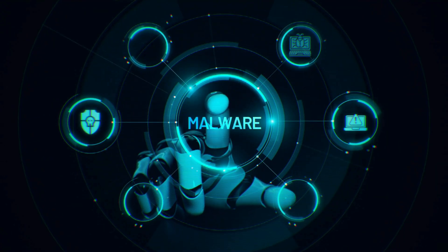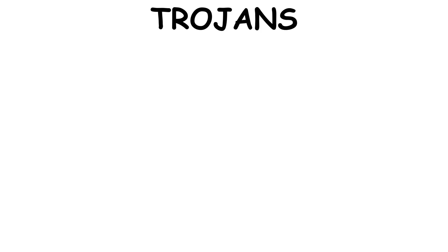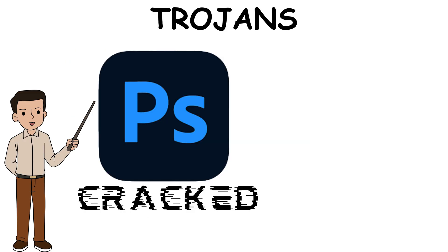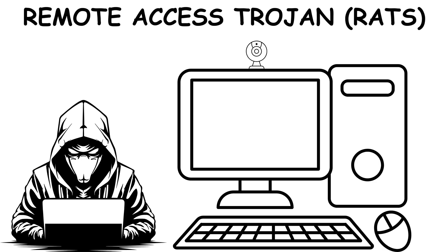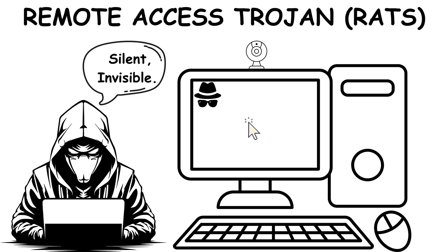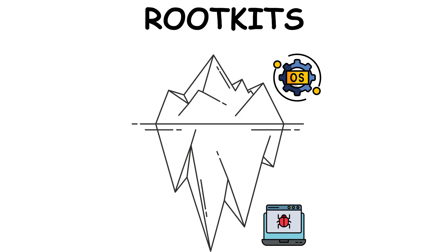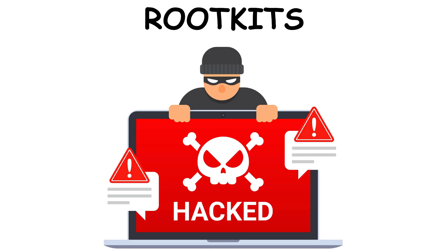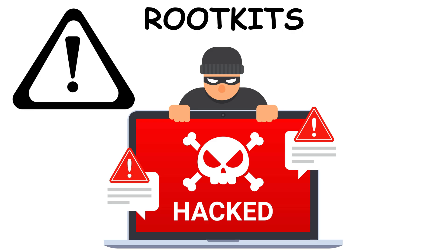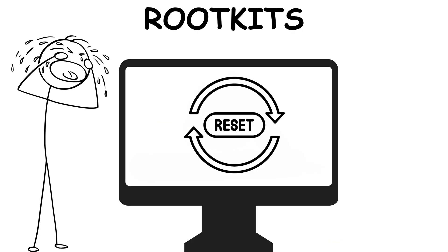Method 2: Malware Infiltration. Malware isn't one thing — it's an arsenal. Trojans disguised as free software like Adobe cracks open back doors for hackers. RATs (Remote Access Trojans) let hackers see your screen, control your mouse, and turn on your webcam — silent and invisible.